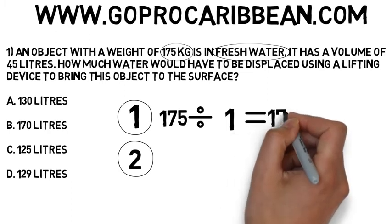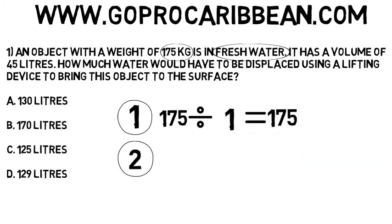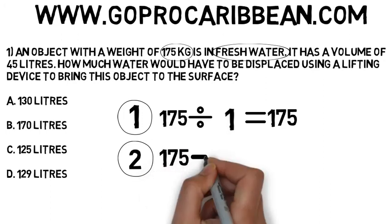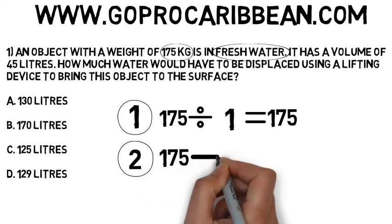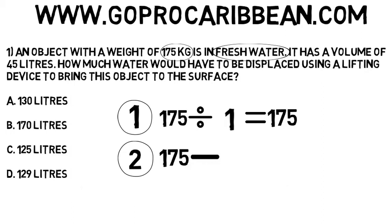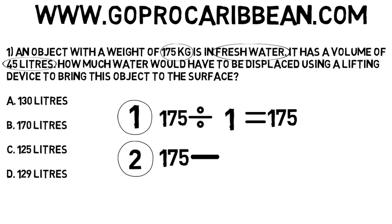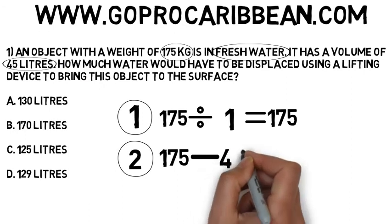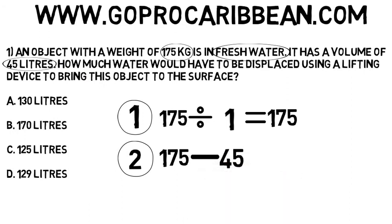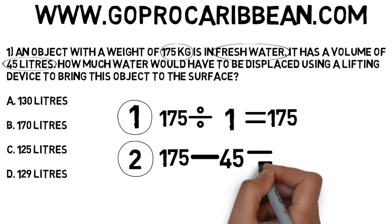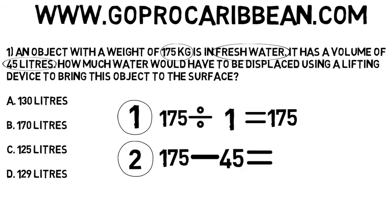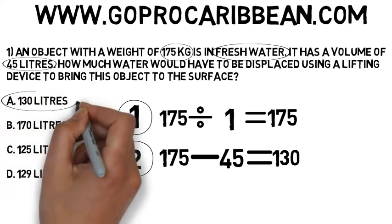We've just calculated the total volume of water we need to displace. We have a certain amount of water already displaced based on the volume of the object. So what is the volume of the object? It's 45 liters. We need to put that 45 in, and now we've got 175 minus 45. What we're calculating is the amount of water we need to use the lift bag to displace — 130 liters.